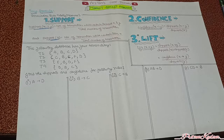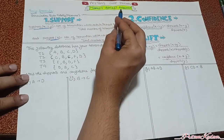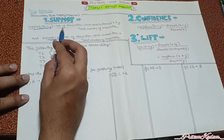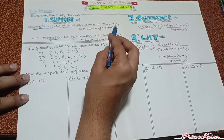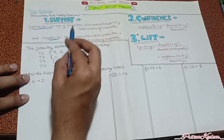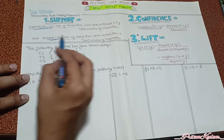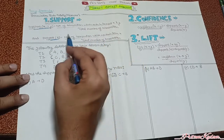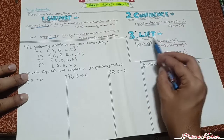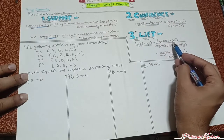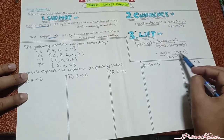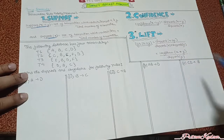Hello everyone. In this video we will solve an example of market basket analysis. We need these formulas: support of X and Y is the number of transactions containing items X and Y upon total number of transactions. Support of X is number of transactions containing item X upon total transactions. Confidence of X and Y is support of X and Y upon support of X. Lift of X and Y is support of X and Y upon support of X into support of Y, which can also be written as confidence of X,Y upon support of Y.